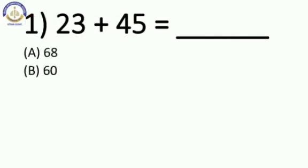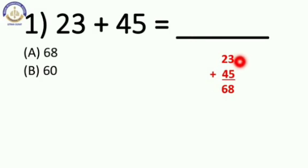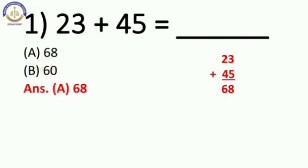The first one is: 23 plus 45 is equal to blank. The options are A: 68 and B: 60. Do the addition — 3 plus 5 is equal to 8, and 2 plus 4 is equal to 6. So the correct answer is 68. Option A is the correct answer — A, 68.